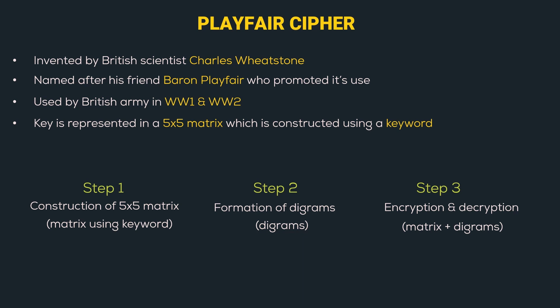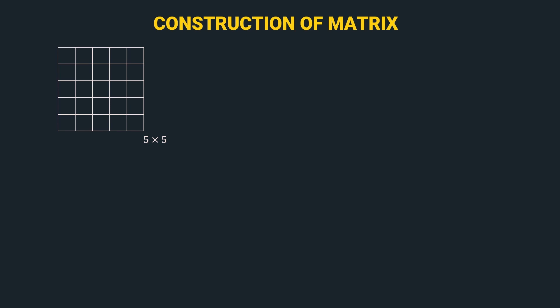Let's start with step 1 — the construction of a 5x5 matrix. We will be filling this matrix with all the alphabets from A to Z. But we have 26 alphabets and only 25 places available. So, in order to fit all the alphabets in the matrix, we will group I and J together, making the total number of alphabets 25. The 5x5 matrix is a permutation and combination of filling the matrix with all the alphabets. Let's understand this using examples.